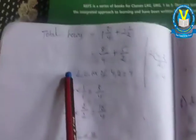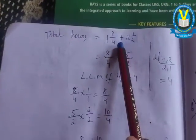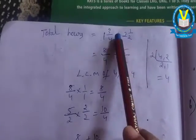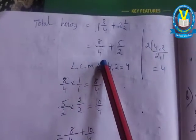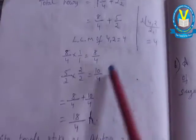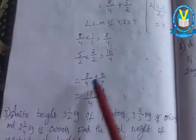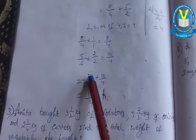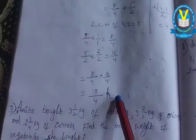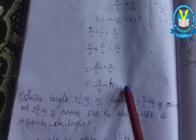These are mixed fractions. Change into improper fractions, do the LCM, change into like fractions, and add. Eight plus ten is eighteen by four hours. She studied total eighteen by four hours.